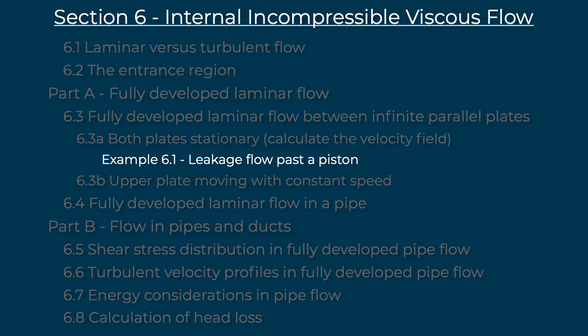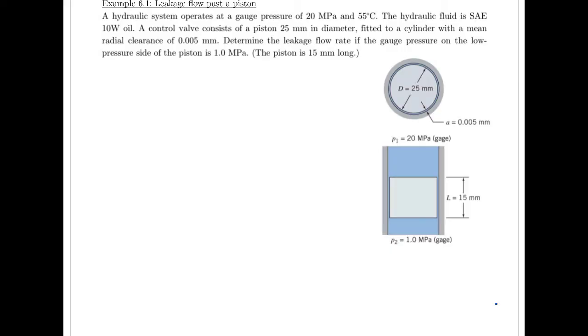Okay, so in this video I'll be solving example 6.1, where we'll look at leakage flow past a piston. This example goes along with video number 16, and we're looking at internal laminar flow bounded between plates. The problem states: A hydraulic system operates at a gauge pressure of 20 MPa and 55 degrees Celsius using SAE 10W oil. The control valve consists of a piston 25 millimeters in diameter fitted to a cylinder with a mean radial clearance of 0.005 millimeters. Determine the leakage flow rate if the gauge pressure on the low pressure side of the piston is 1 megapascal. The piston is 15 millimeters long.